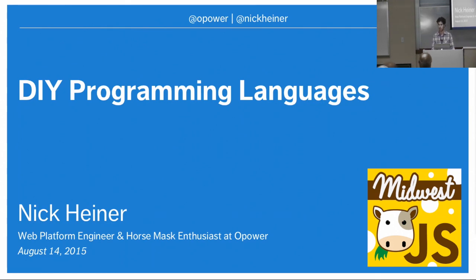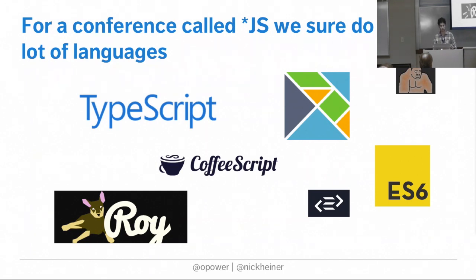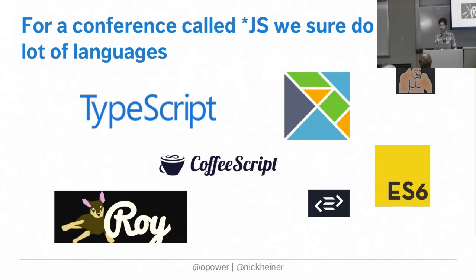Today I'm going to tell you about how you can make your own programming language. As a community we use a lot of different languages, even different versions of the same language. There's a lot of interest in compilers and JS alternate languages. With things like ES6 and ES7 we have rapidly evolving specs but browsers that move a lot more slowly, so we're interested in compiling these things. I think this is a relevant topic to share with everyone.